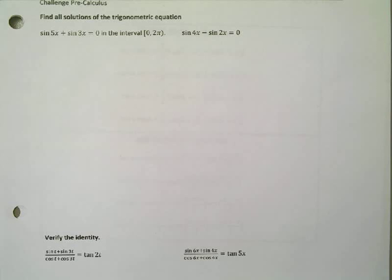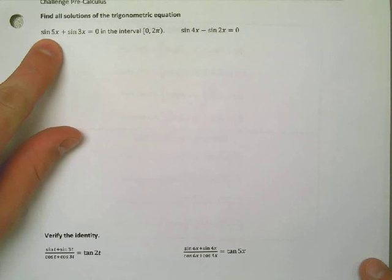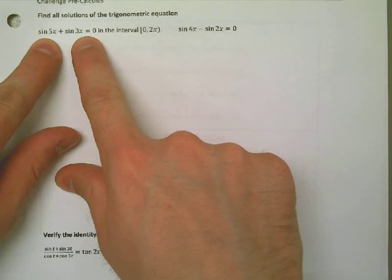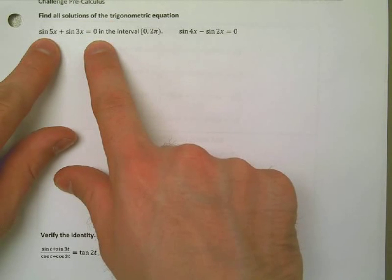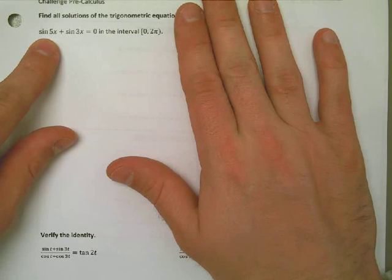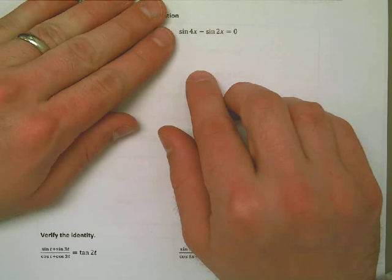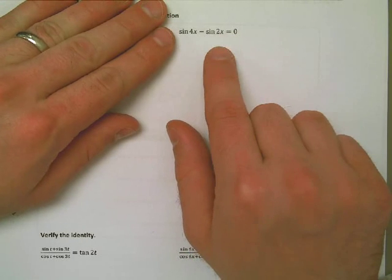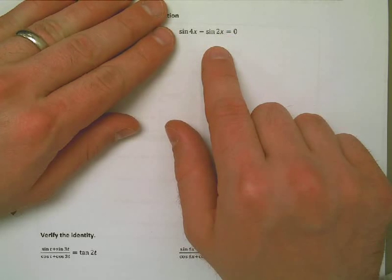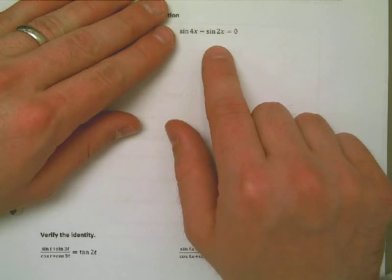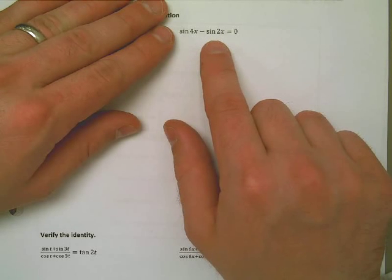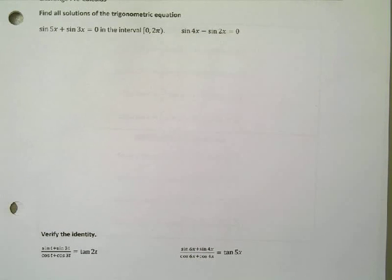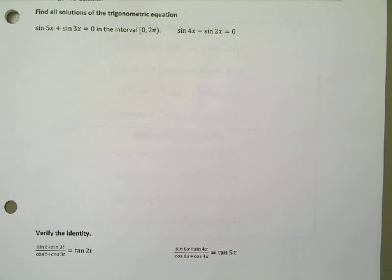Okay, in this video we're going to use sum to product formulas. We're going to turn this into a product so we can help solve this equation easily. This first equation is in the interval 0 to 2π. The second one is just going to be a general solution, so we're going to have the nπ business that comes from lesson 5.3. So, here's what we're going to do.